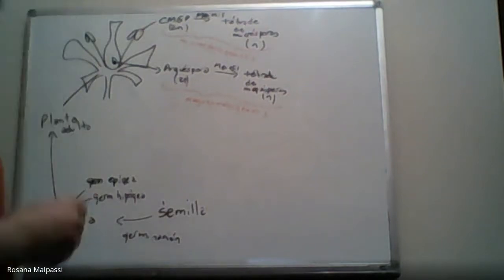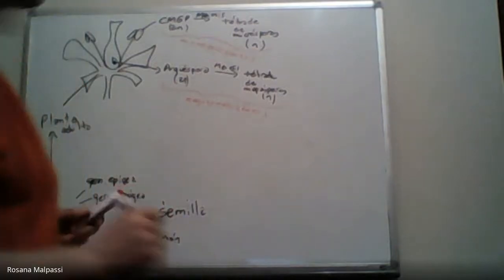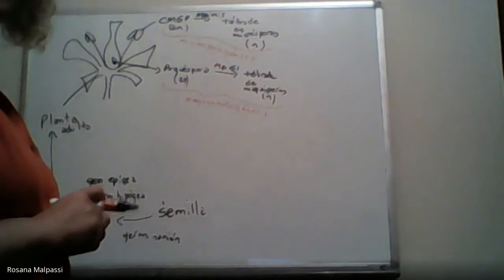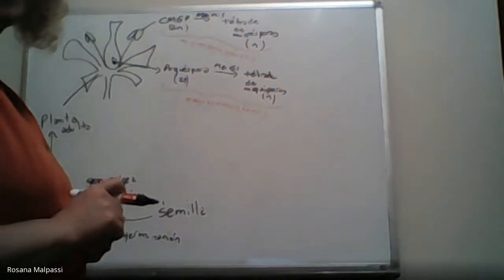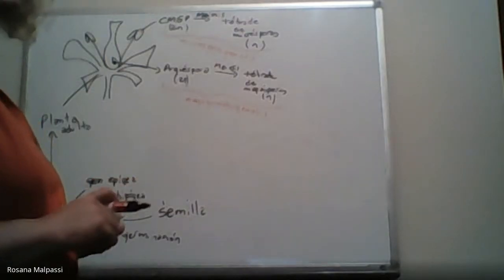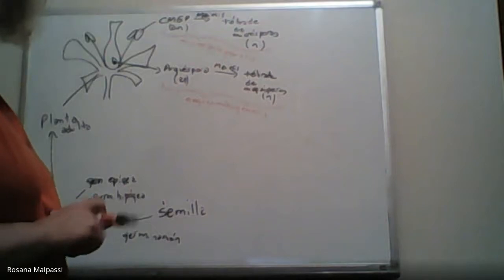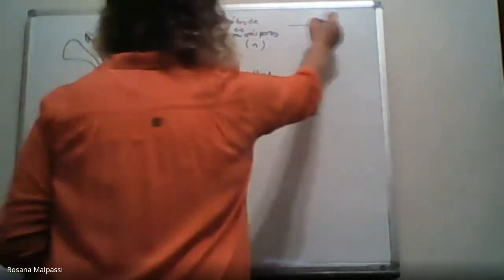De la tétrade de microsporas, todos son viables, sufren... ¿Cuántas divisiones mitóticas? ¿Las microsporas cuántas divisiones mitóticas van a sufrir?